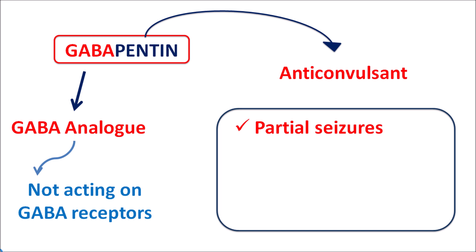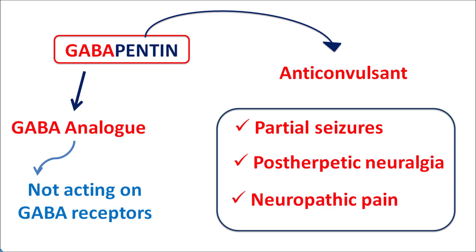Gabapentin can also reduce hyperalgesia, so it is indicated for the treatment of post-herpetic neuralgia — the neuropathic pain that develops after herpetic infection. Similarly, it can also be used for the management of neuropathic pain in general.